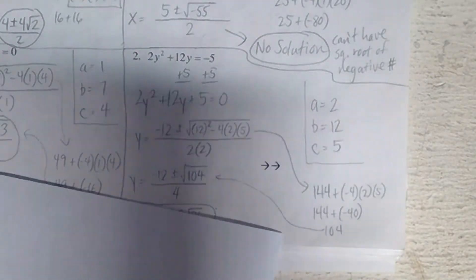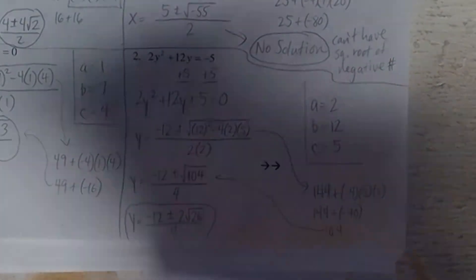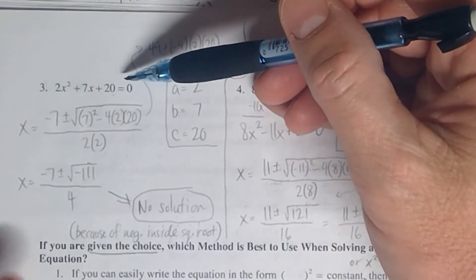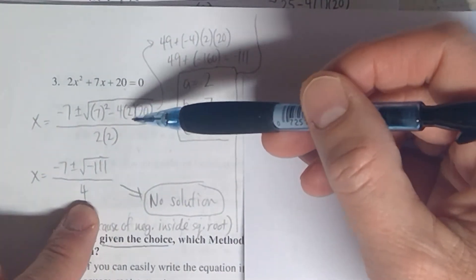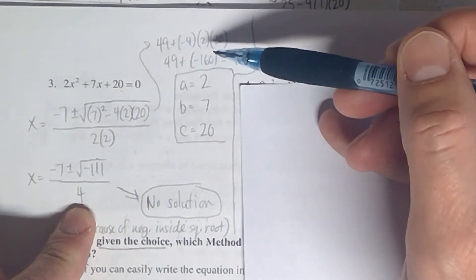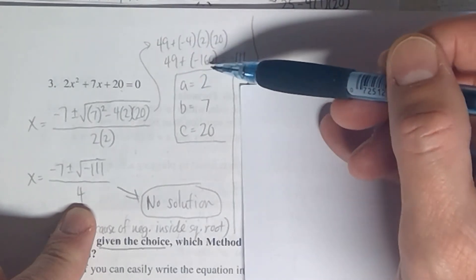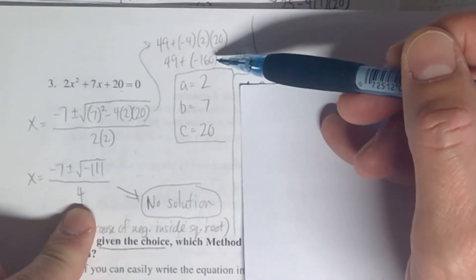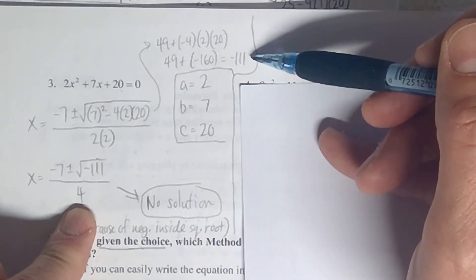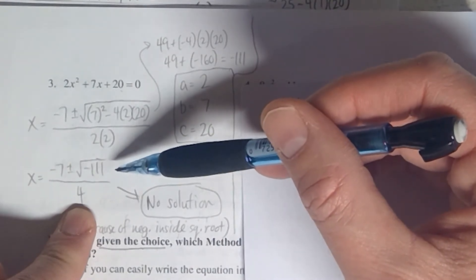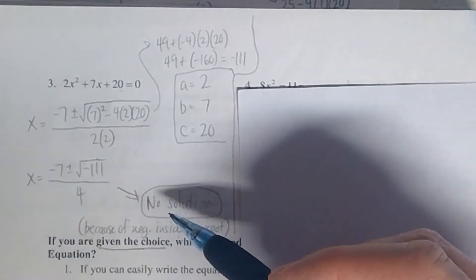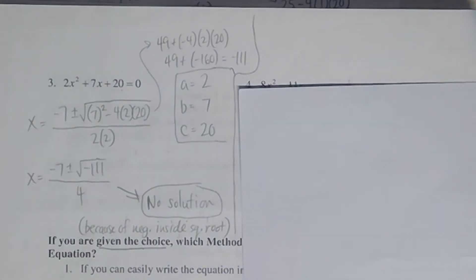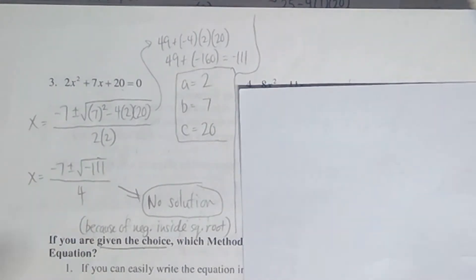Problem 3 on the second page: all terms are already in the appropriate position. Plug in a, b, and c. Figure out the denominator and the inside of the radical. The exponent gives 49, then multiplying gives negative 160, so 49 plus negative 160 — same as 49 minus 160 — equals negative 111. Since this is negative under the radical, just like problem D on the first page, there is no solution.